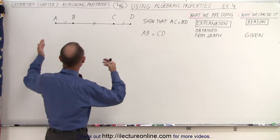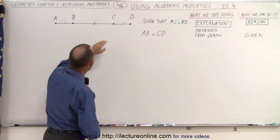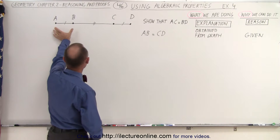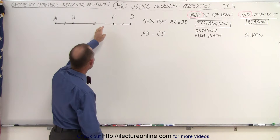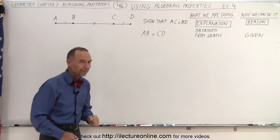Here we have a line section from A to D, and it's subdivided into three smaller sections: from A to B, from B to C, and from C to D.